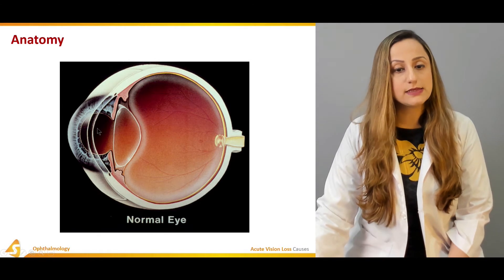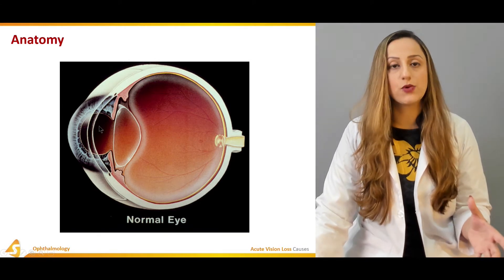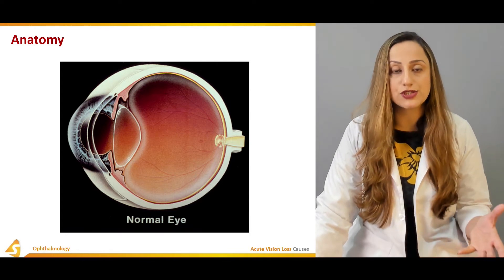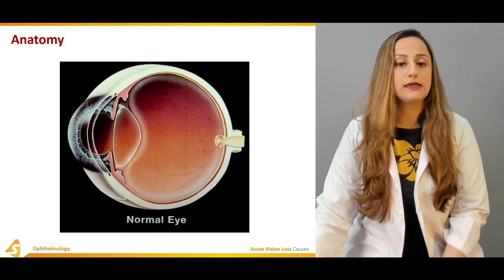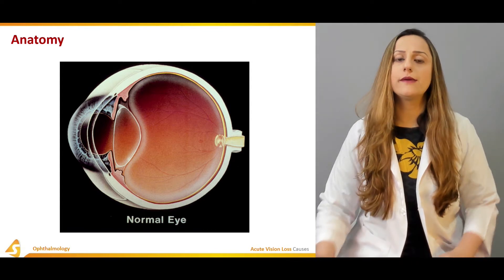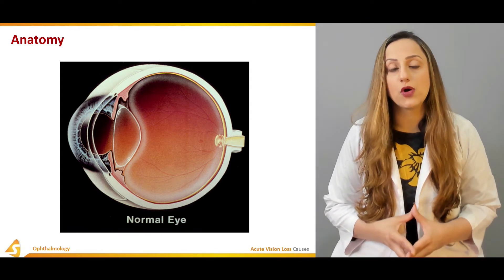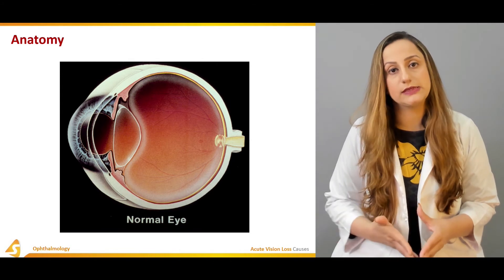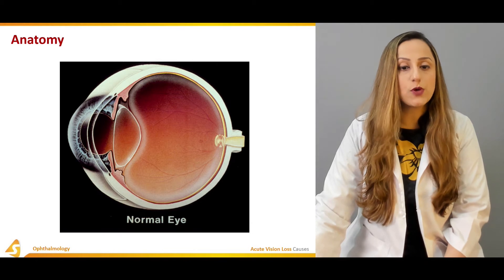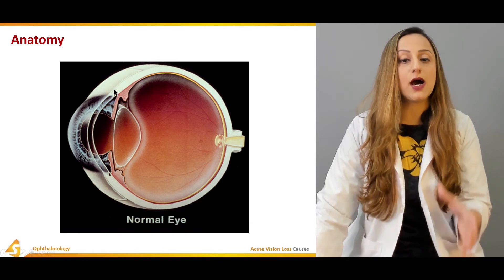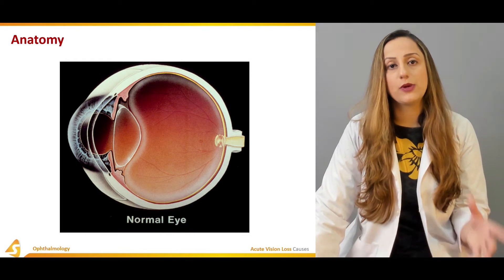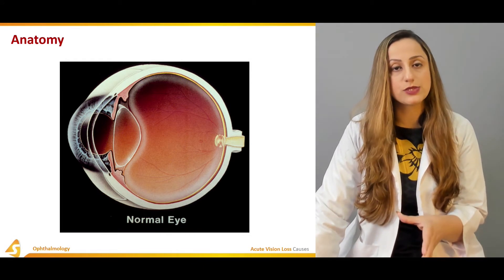Then we have lens trauma — any trauma to the lens or factors that can affect it. This includes the cataract condition, which can also lead to vision loss. However, with cataract, the vision loss is usually of the chronic type rather than acute. This is one of the distinguishing factors that allows us to exclude cataract when making a differential diagnosis.